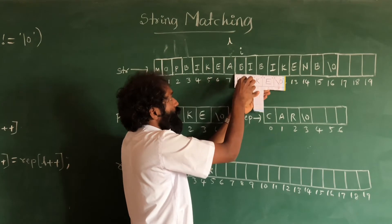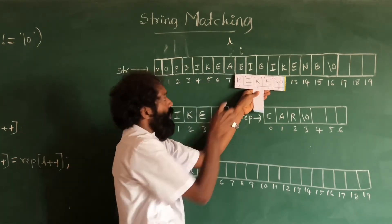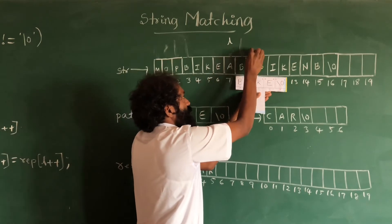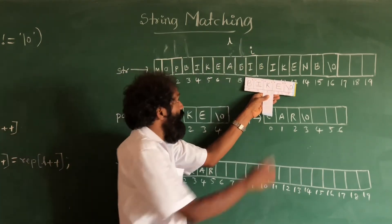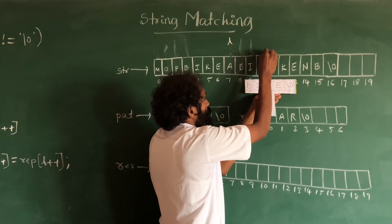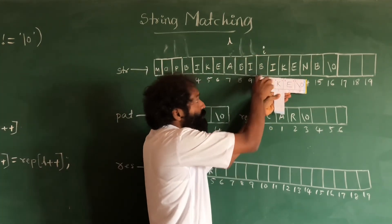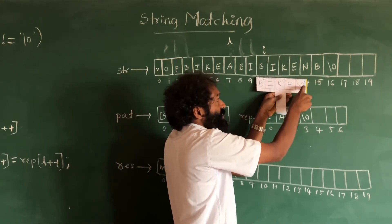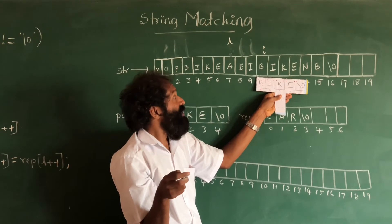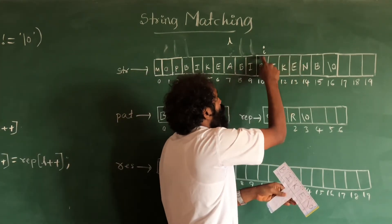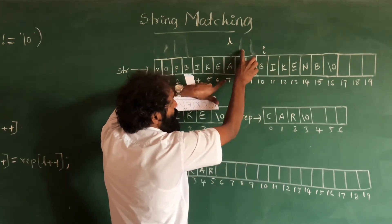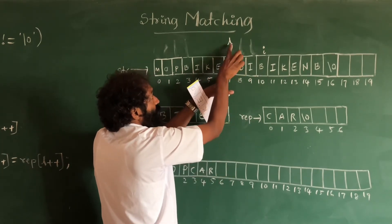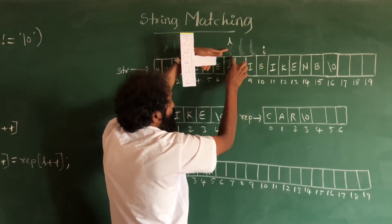Same thing repeats. If both characters are different, increment i. Now both are same so compare next — same again, compare next — here it is different, so just increment i. Again check — both different, increment i. Now both are same, check next, same, check next, same, check next, same, check — we get null character. Null character means string is found again.